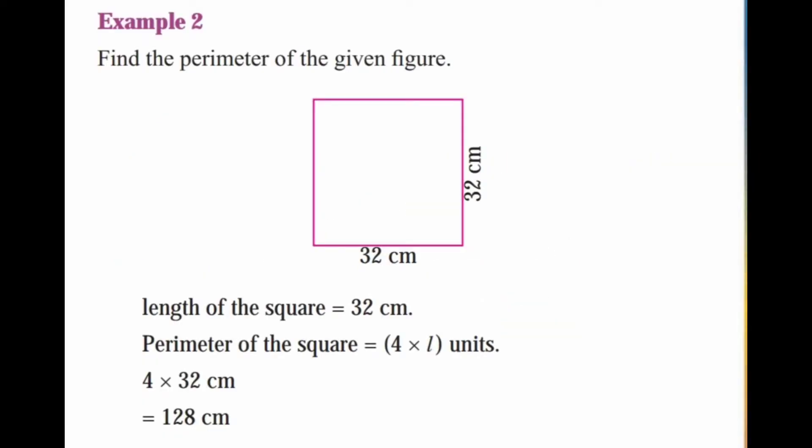Second example: find the perimeter of the given figure. The length of the square is equal to 32 centimeters. So, perimeter of the square is equal to 4 into L, that is 4 into 32. 4 twos are 8, 4 threes are 12, so the answer is 128 centimeters.